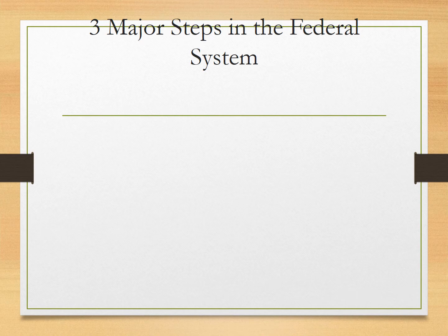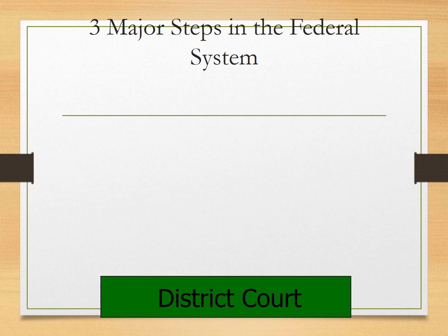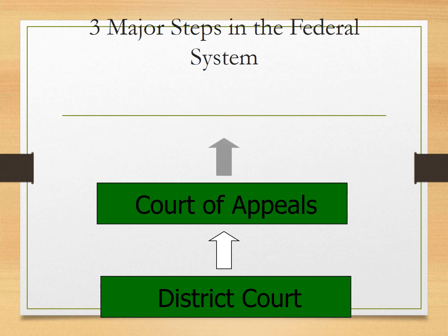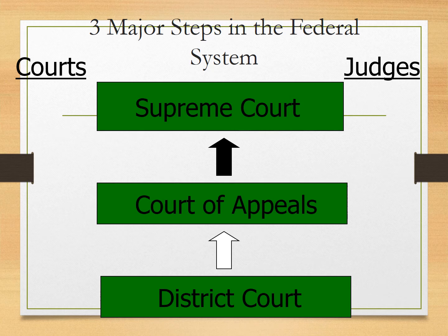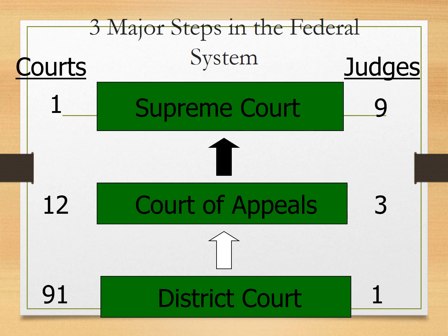Now, in our federal system — just the national system — we've got three major steps. We've got our lowest courts, which are called the district courts. Above the district courts, we have the Court of Appeals. And then finally we've got the Supreme Court. There are 94 different district courts around the country, and each one has one district court federal judge. Then we have our Court of Appeals — there are only 12 appellate courts around the country, and each one has three judges serving on it. And then finally the Supreme Court — there's only one of them, and the Supreme Court has nine judges.